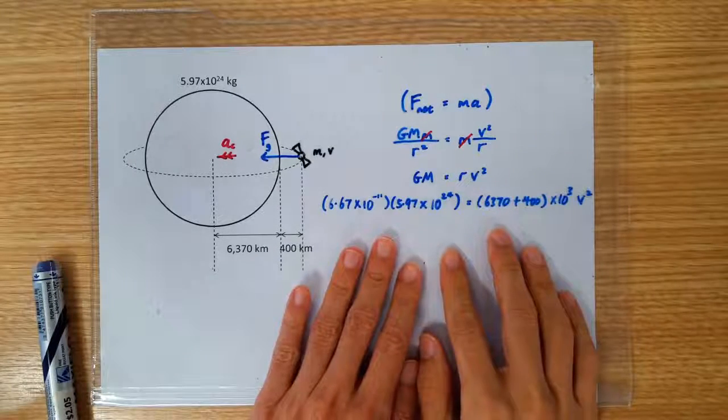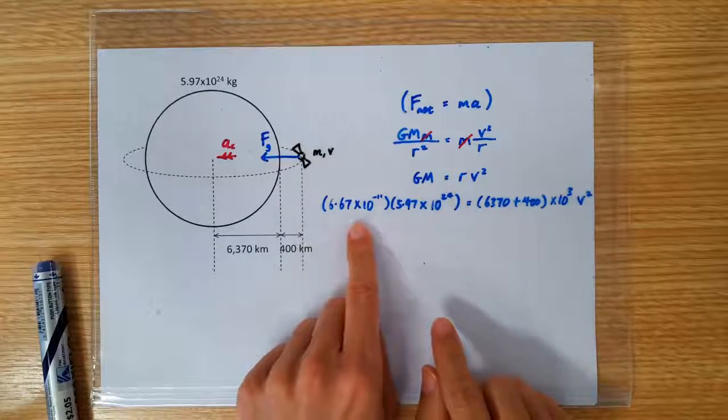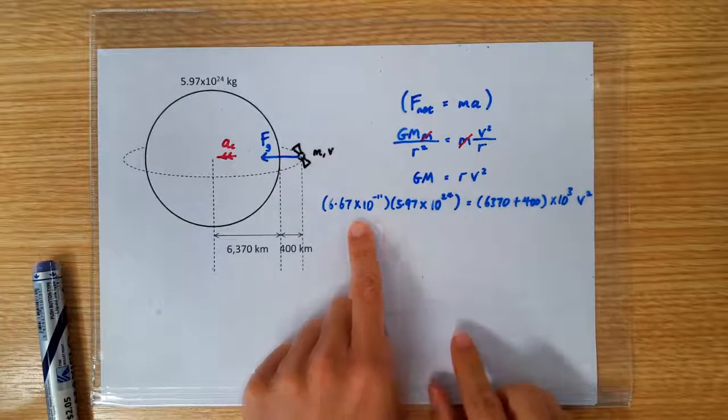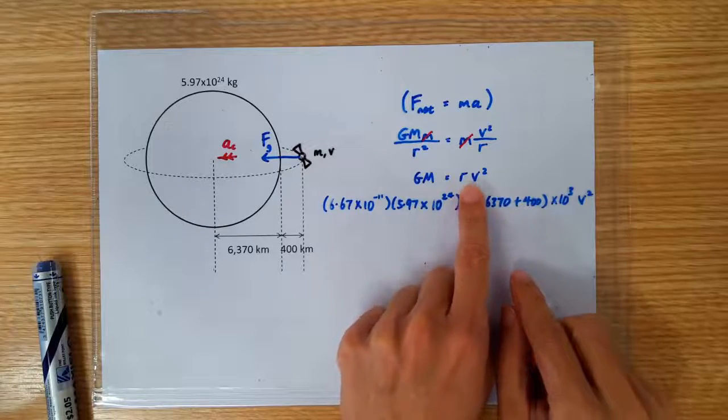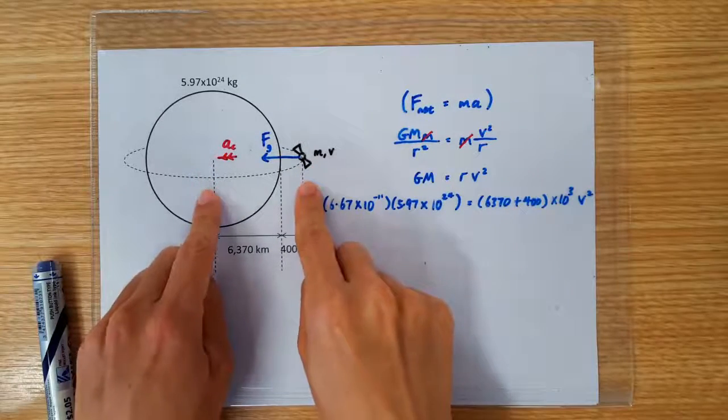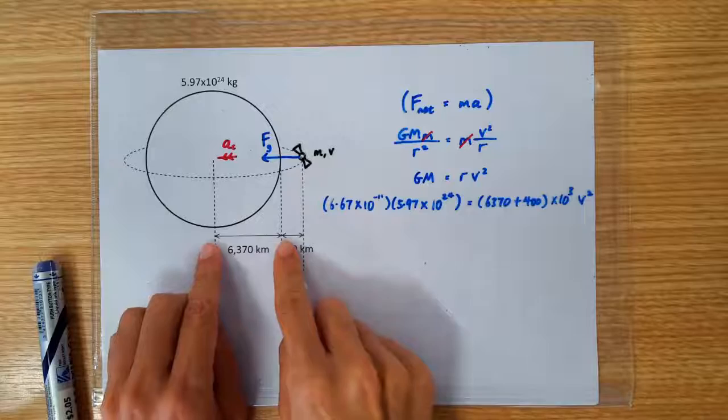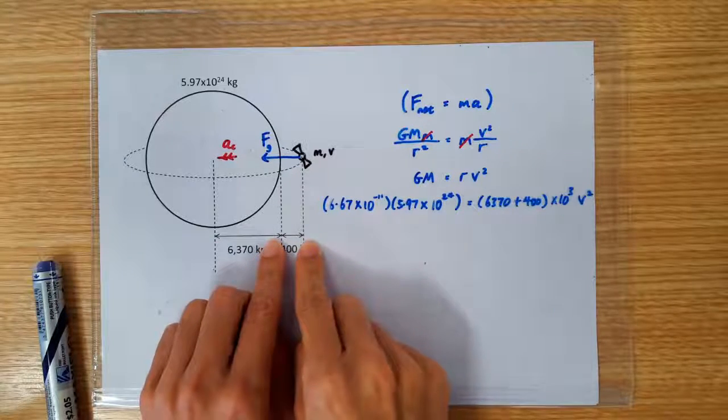We now substitute in all the numbers: the universal constant of gravitation, the mass of the Earth. What we need here is the radius of the circular motion, which is this distance here. So it includes the radius of the Earth plus the altitude.